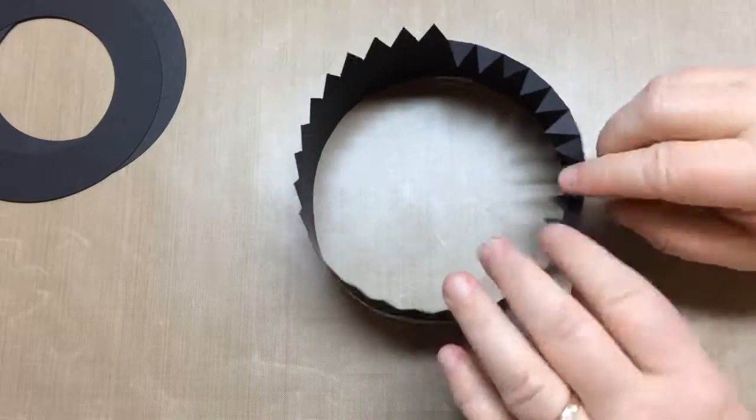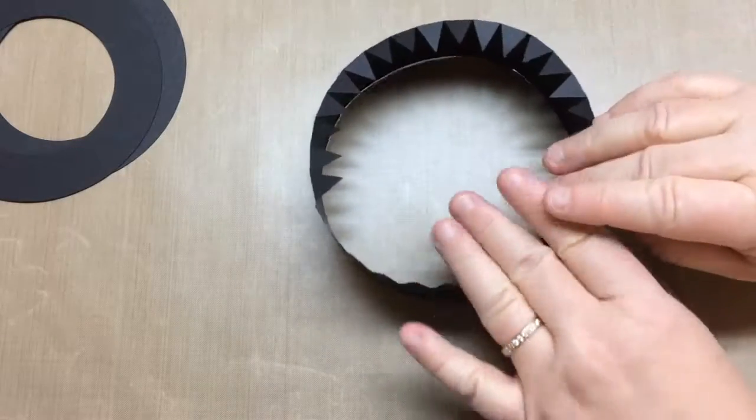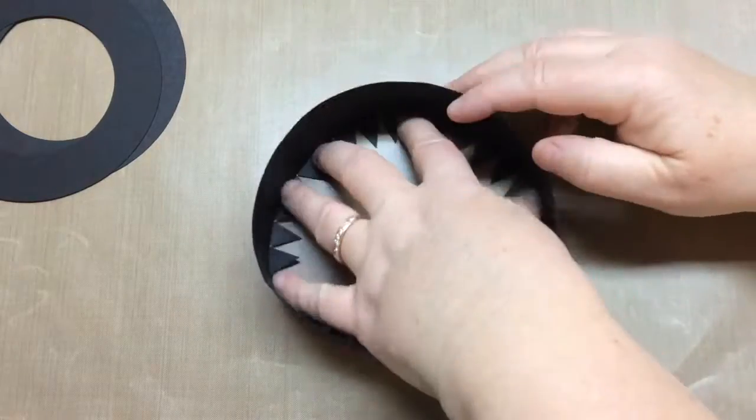Then we fold in all the tabs and this is so we can glue on the lid insert. So flip it over.